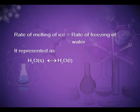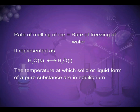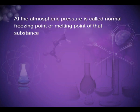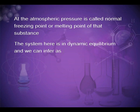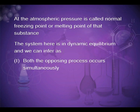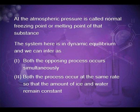This is represented as H₂O(s) ⇌ H₂O(l). The temperature at which solid and liquid forms of a pure substance are in equilibrium at atmospheric pressure is called the normal freezing point or melting point. The system is in dynamic equilibrium: both opposing processes occur simultaneously and at the same rate, so the amounts of ice and water remain constant.